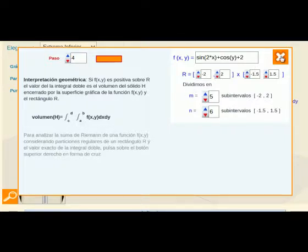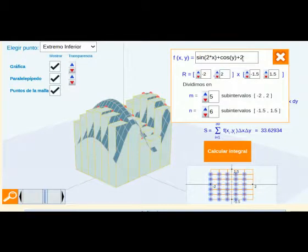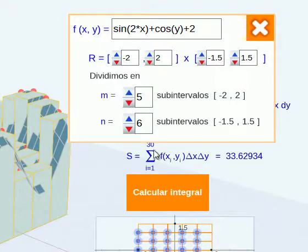Podemos visualizar esta interpretación y el valor de la suma de Riemann compararlo con el valor exacto cerrando el cuadro de presentación y viendo para una función que viene establecida inicialmente pero que se puede cambiar y para un número de subintervalos en los que se puede subdividir tanto el intervalo menos 2.